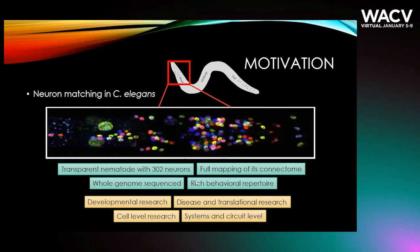Moreover, it also possesses a rich behavioral repertoire, and these are the reasons that people in neuroscience are really interested in studying this animal for various reasons, including developmental research, disease and translational research, and cell-level and systems and circuit-level research trying to understand how the activity of the neurons inside C. elegans gives rise to its behavior.